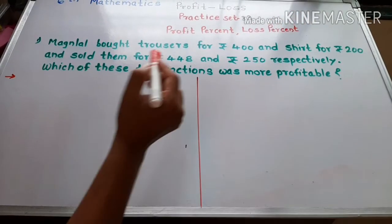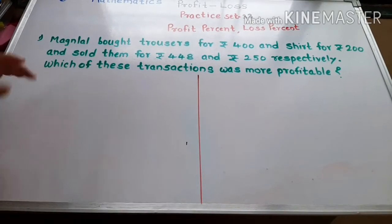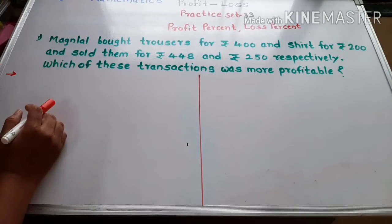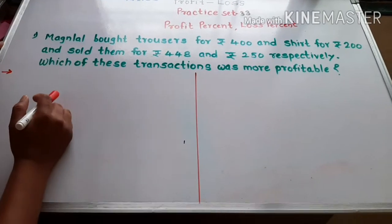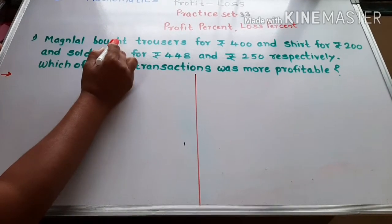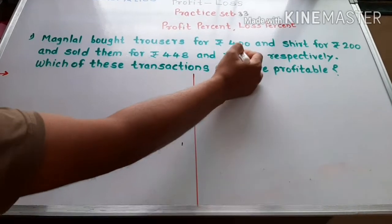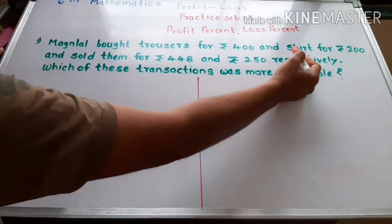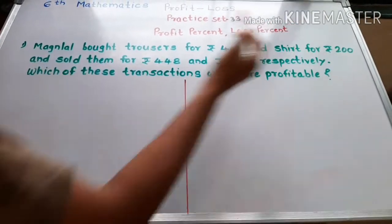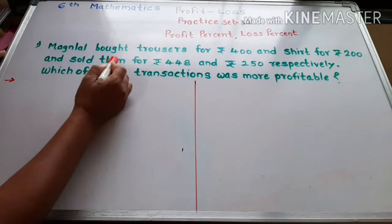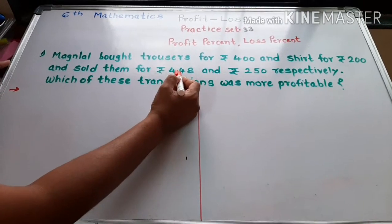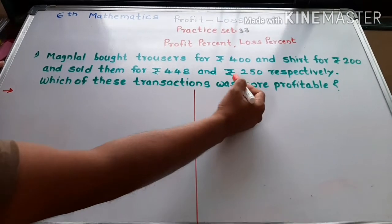Now here are some examples. First is the example. Read the example very carefully. Magan Lal bought trousers for Rs. 400 and shirt for Rs. 200 and sold them for Rs. 448 and Rs. 250 respectively.